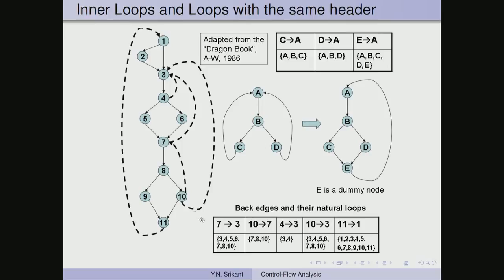When loops share a header, neither nesting nor disjointness may hold, and in that case we must combine the loops. In our big example, the loops are: 7→3, 10→7, 4→3, 10→3, and 11→1. The nodes {7, 8, 10} form a subset of the loop structure of 7→3, so 10→7 is nested within 7→3. Similarly, {7, 8, 10} is nested in 10→3 and 11→1. The loop {3, 4} for back edge 4→3 is nested in 7→3, 10→3, and 11→1. The loops 4→3 and 10→7 are disjoint since they share no nodes.